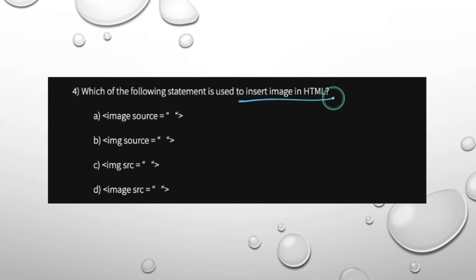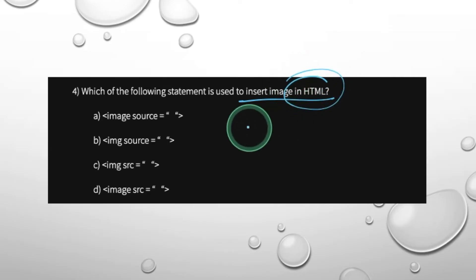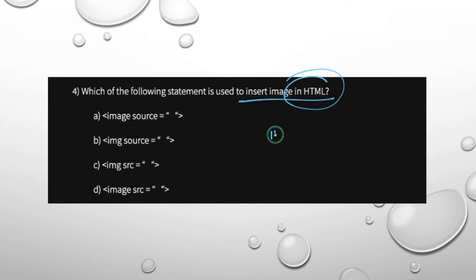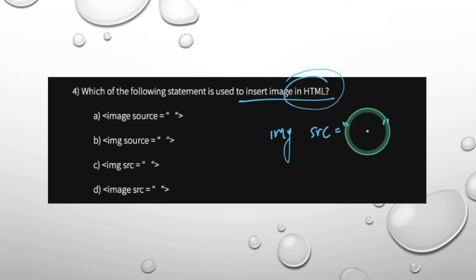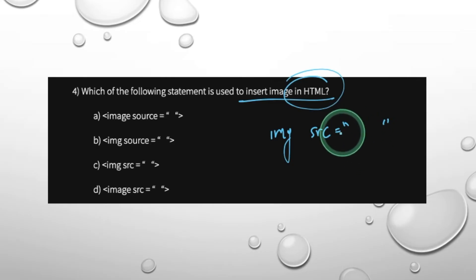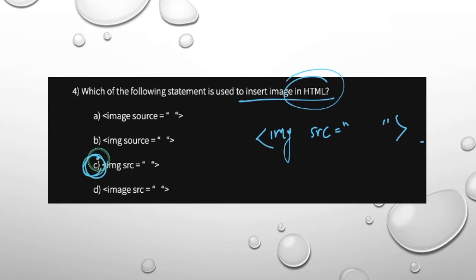Which of the following statement is used to insert an image in HTML? In HTML, you can find some options. The tag used is img.src — img is the image tag, src is the source attribute. Then you provide the name of the image with its extension. That is called img.src.